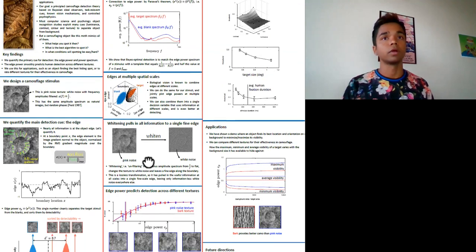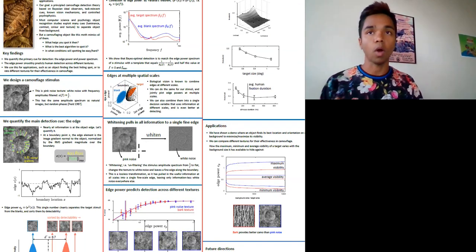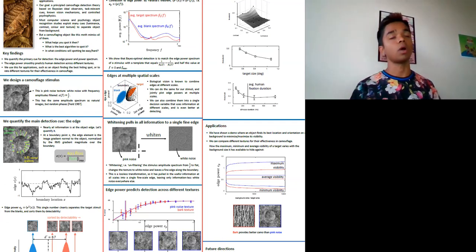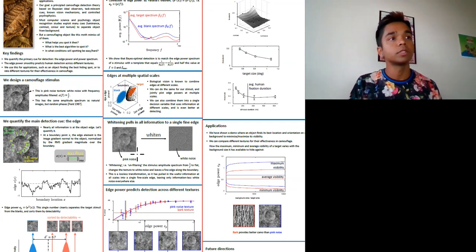Another way of accumulating the information at multiple scales is to whiten the stimulus, that is to unfilter its amplitude spectrum from 1 over f to flat. This transforms the texture to white noise.